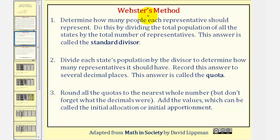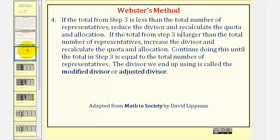Step three is what's different about Webster's method. We round all the quotas to the nearest whole number, then we add these values, which can be called the initial allocation or initial apportionment. Step four: if the total from step three is less than the total number of representatives, we reduce the divisor and recalculate the quota and allocation. If the total from step three is larger than the total number of representatives, we increase the divisor and recalculate. We continue doing this until the total equals the desired number of representatives. The divisor we end up using is called the modified divisor or adjusted divisor.